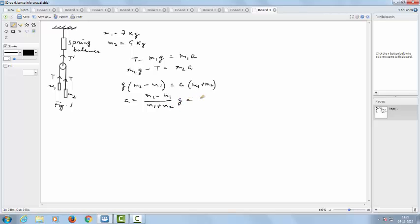Now, we can put the values of M2 and M1 which will give us 2 divided by 16 and we can take the value of acceleration due to gravity equal to 10. So, this gives us 1.25 meter per second square.